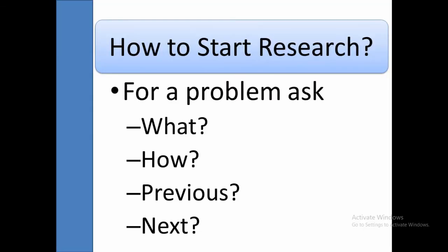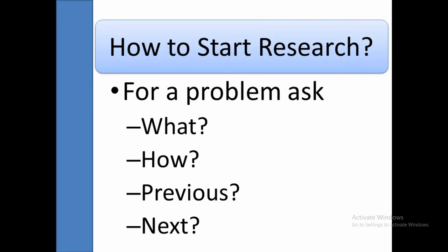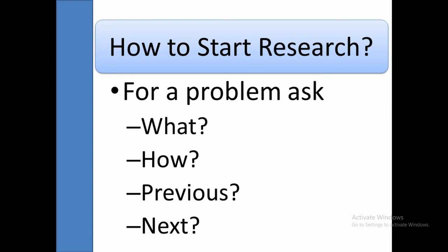The first question is 'What?' — what problem did they address in that paper? The second question is 'How?' — how was it solved, what method and parameters were used, what is the outcome? The third question is 'Previous' — what work was carried out in that area previously? That is called a literature review. The fourth question is 'Next' — what areas are left unexplored in your selected area? That is called problem identification. By collecting a recent journal paper in your area and asking these four questions, your work will be started.